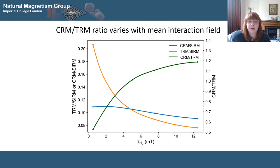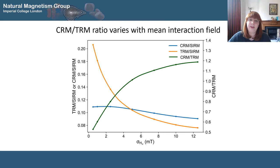Here are a couple of examples of things I've looked at — there's more on my poster. One thing we were interested in is CRM intensities. We can see here that the CRM intensity, shown by the blue line, decreases for increased interactions on the x-axis. This makes sense, as higher interactions mean the field is recorded less well.